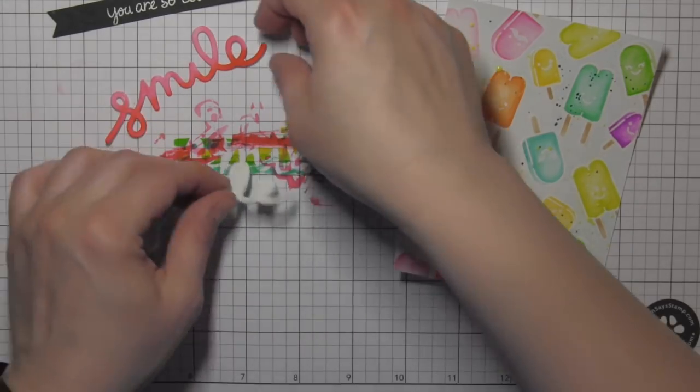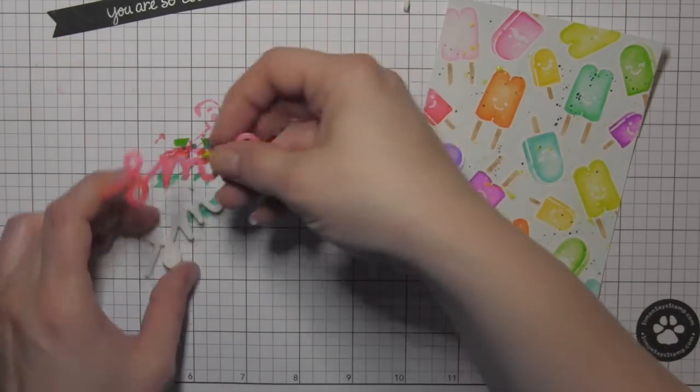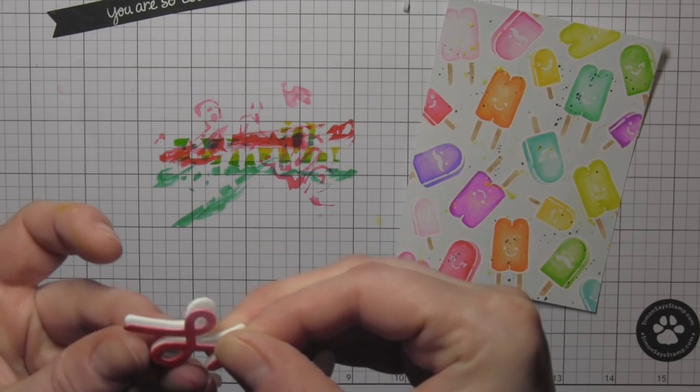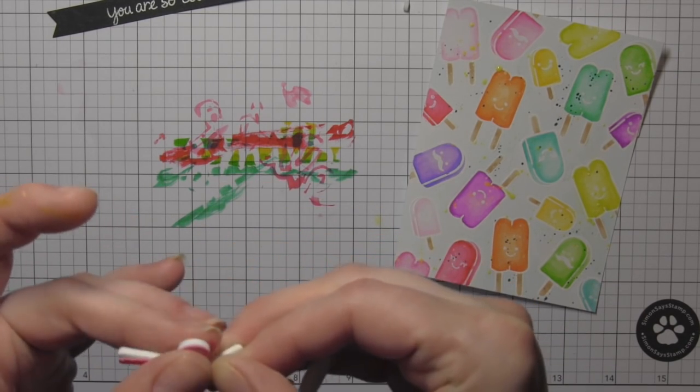So I have that fun foam piece. I'm going to remove the adhesive from the front of the die cut fun foam word, and then place my colored die cut word right on top of that.